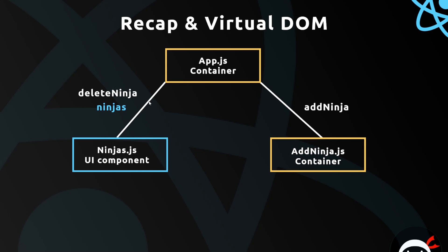We can invoke it from here, pass up the ID of the ninja we want to delete, and inside that delete ninja function we filter through the ninjas array on the state and remove that ninja, thereby updating the state, thereby updating the prop again down here, thereby updating the template to reflect that change in the ninjas prop. So this whole cycle is going on all the time when we're deleting ninjas and adding ninjas.